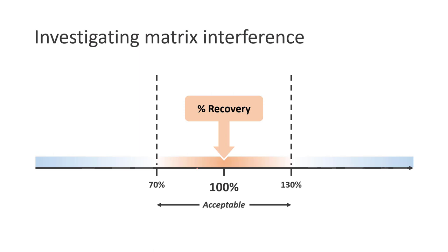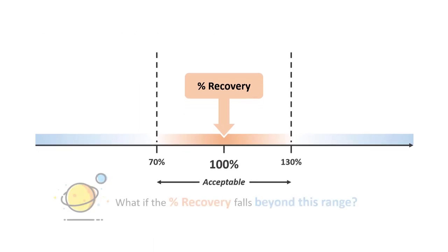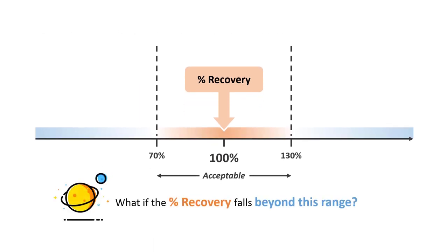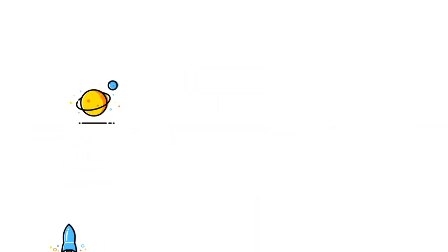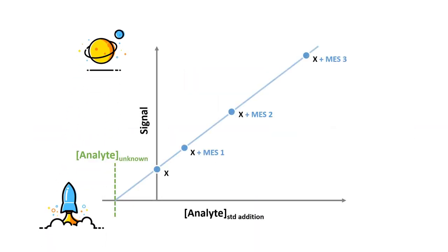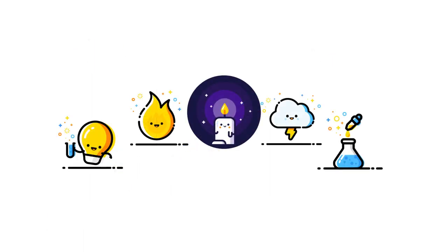What if the percentage recovery falls beyond this range? Well, this is where the standard addition method comes in. However, instead of using a multi-element standard for the standard addition, we can simply use one or a mixture of single element standards for the elements with the percentage recovery falls beyond the acceptable range. Congrats, you have just completed the e-lecture series of ICP-AES.